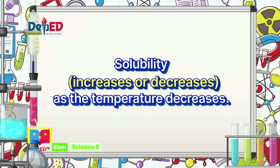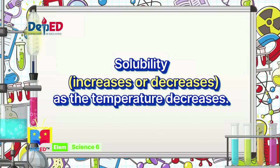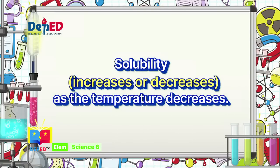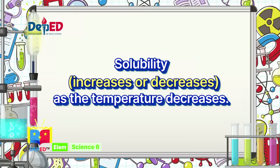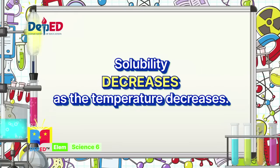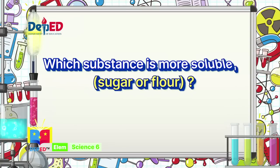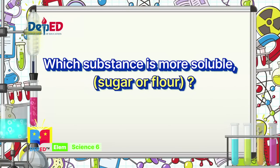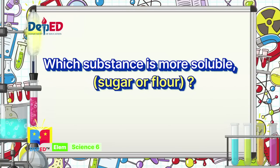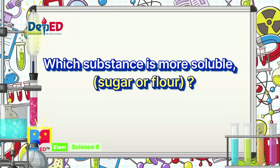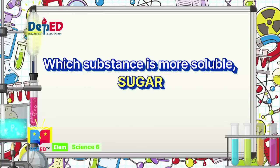Number 2: Solubility increases or decreases as the temperature decreases. The correct answer is: Decreases. Number 3: Which substance is more soluble — sugar or flour? The correct answer is: Sugar.